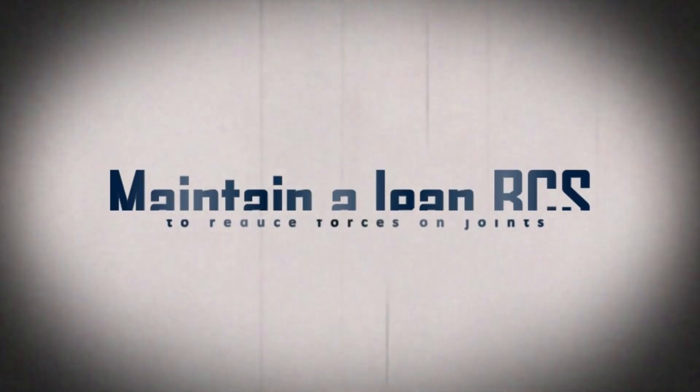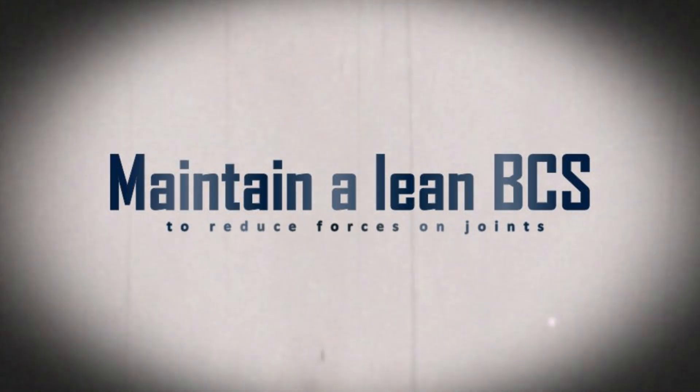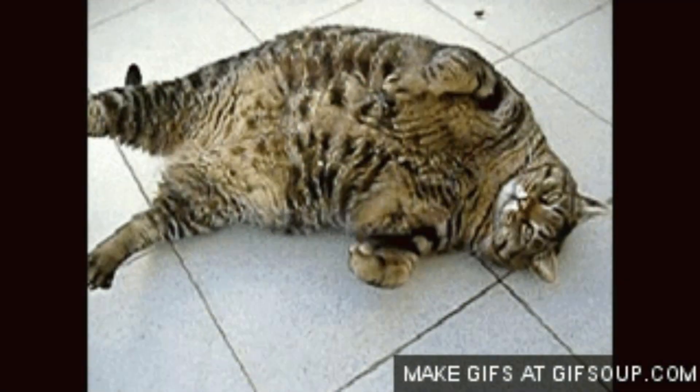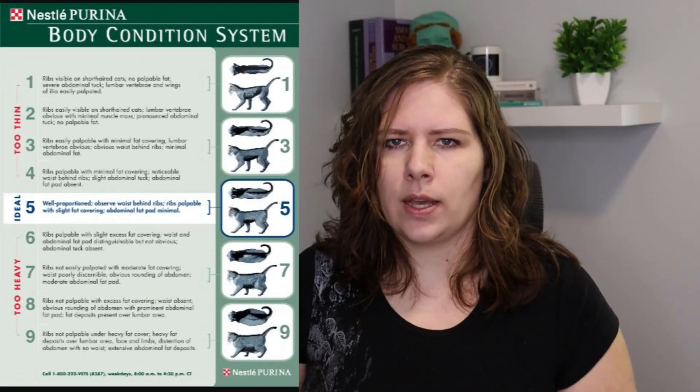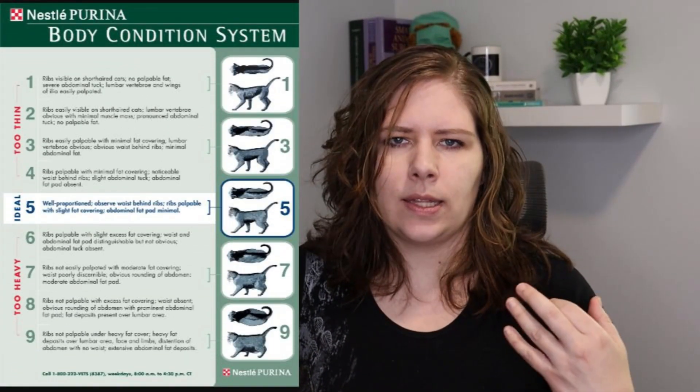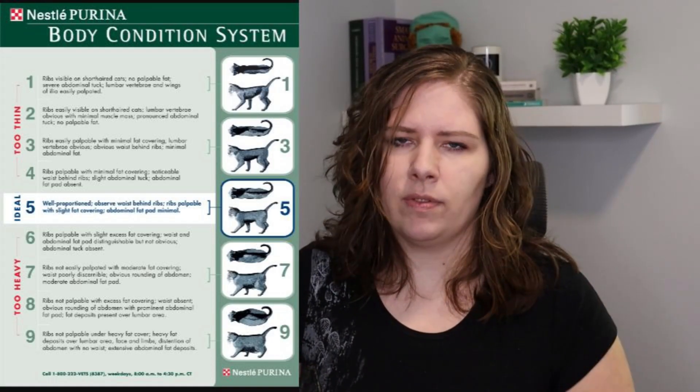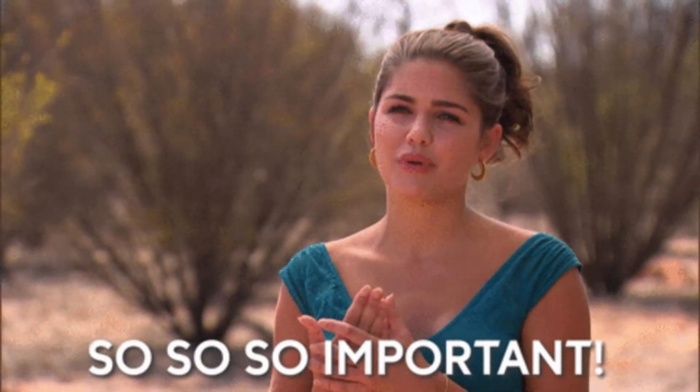If there are any other disease processes that could be contributing to the formation of osteoarthritis — like hip dysplasia or patella luxation — those must be addressed first. Now, we don't have any research in the cat species showing that being overweight causes arthritis. However, the extra weight will increase the forces on their joints, and abnormal forces on joints will make those joints more painful. So getting them to a body condition score of 5 out of 9 is very important.